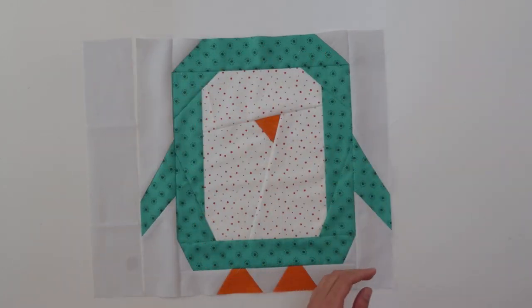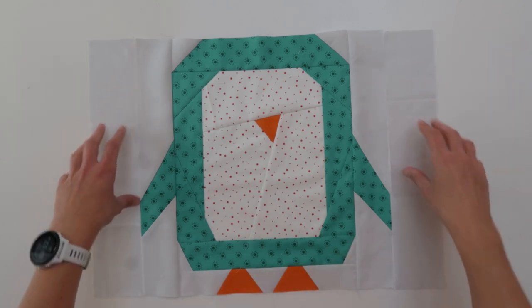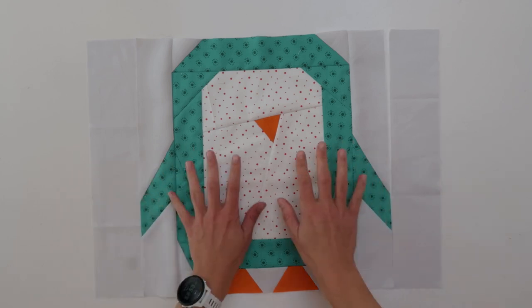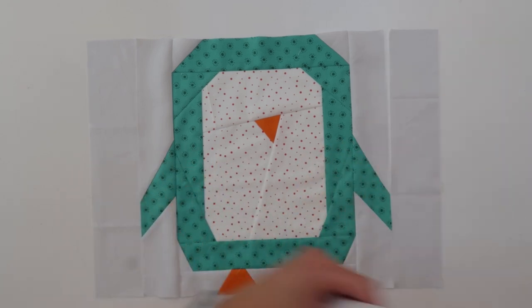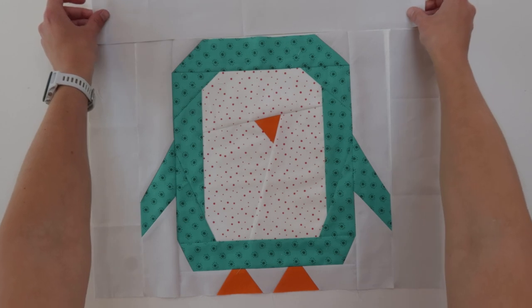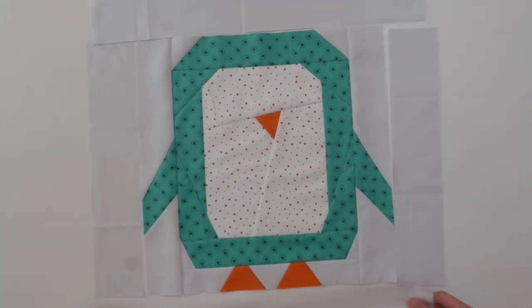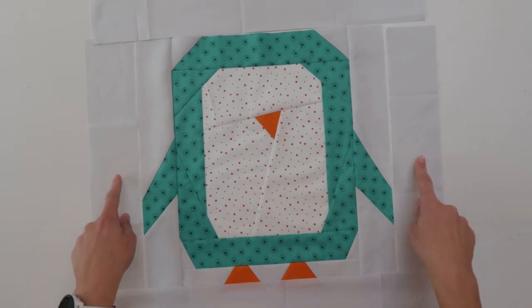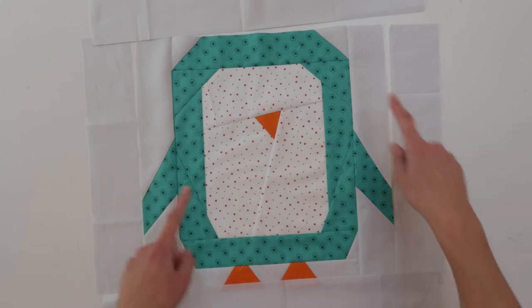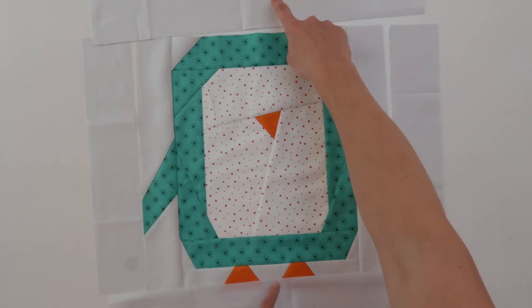These strips are three inches wide, so that will add two and a half inches finished to the 15 inch block. And here's a three inch strip that we will add to the top and the three inch strip to the bottom. So these two are three inches by 15 and a half, and these two are three inches by 20 and a half.